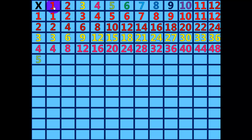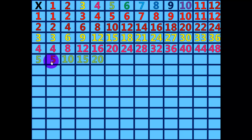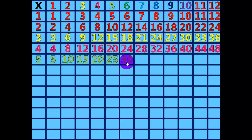5 times 1 equals 5. 5 times 2 equals 10. 5 times 3 equals 15. 5 times 4 equals 20. 5 times 5 equals 25. 5 times 6 equals 30. 5 times 7 equals 35.